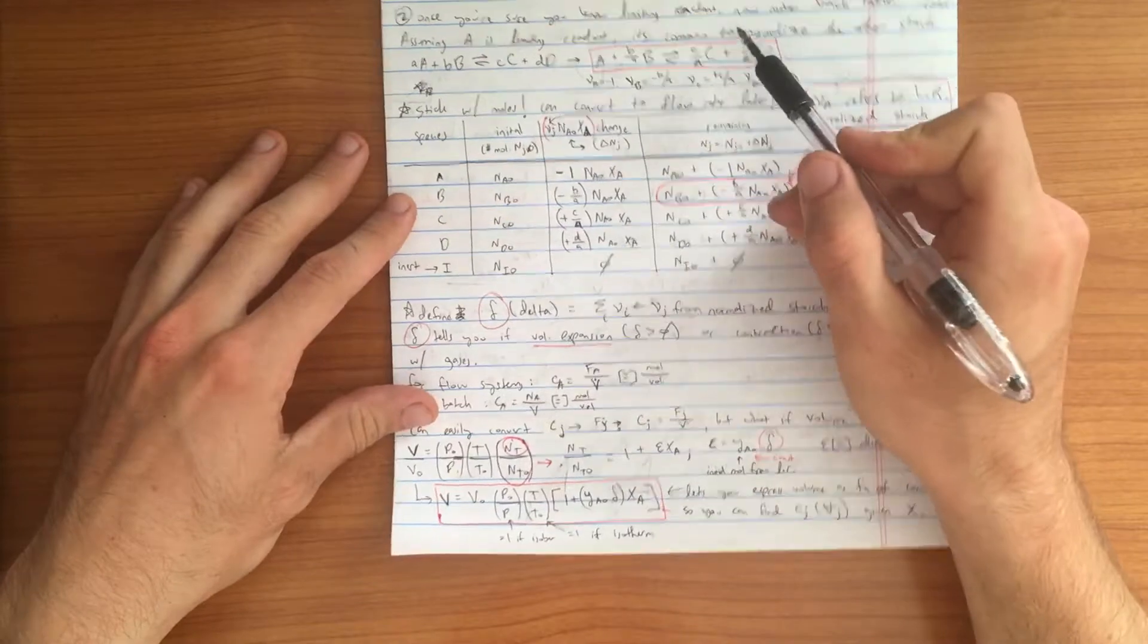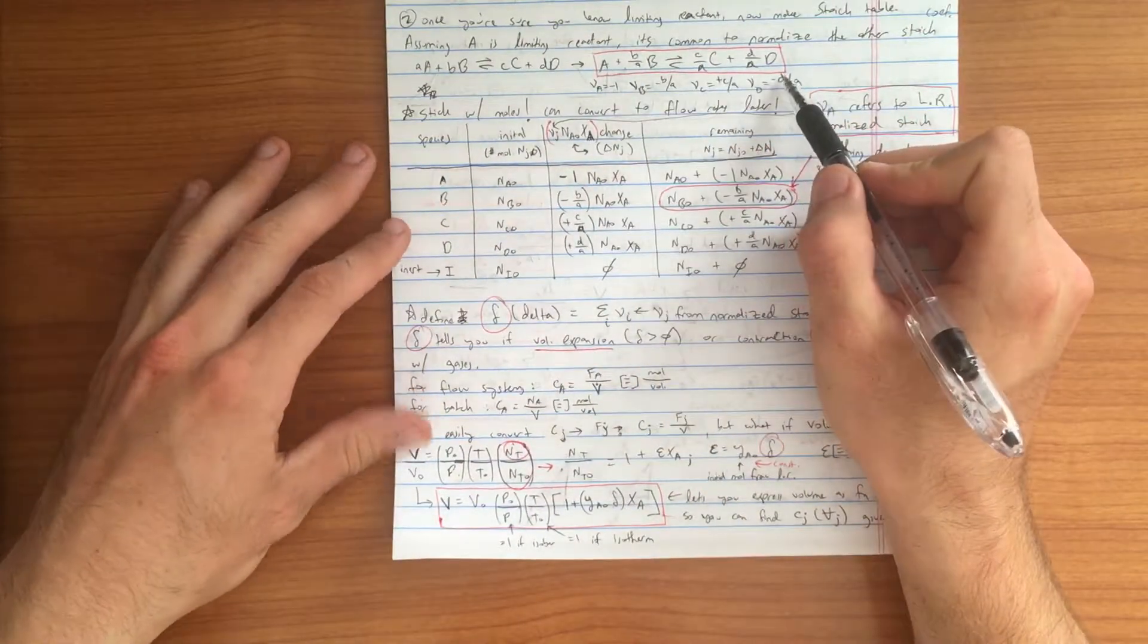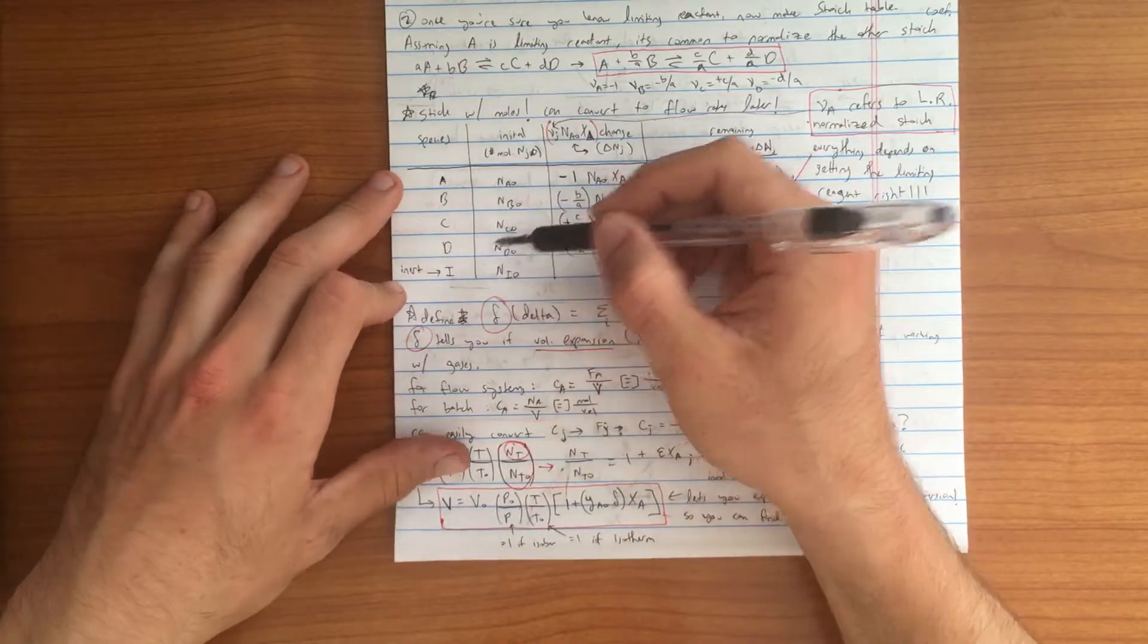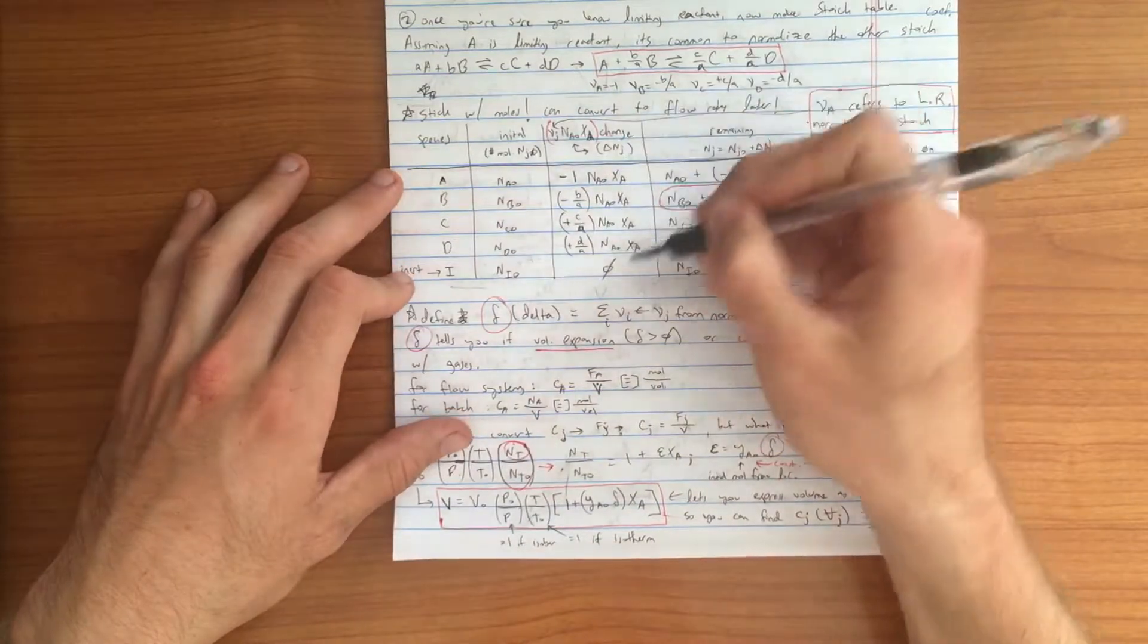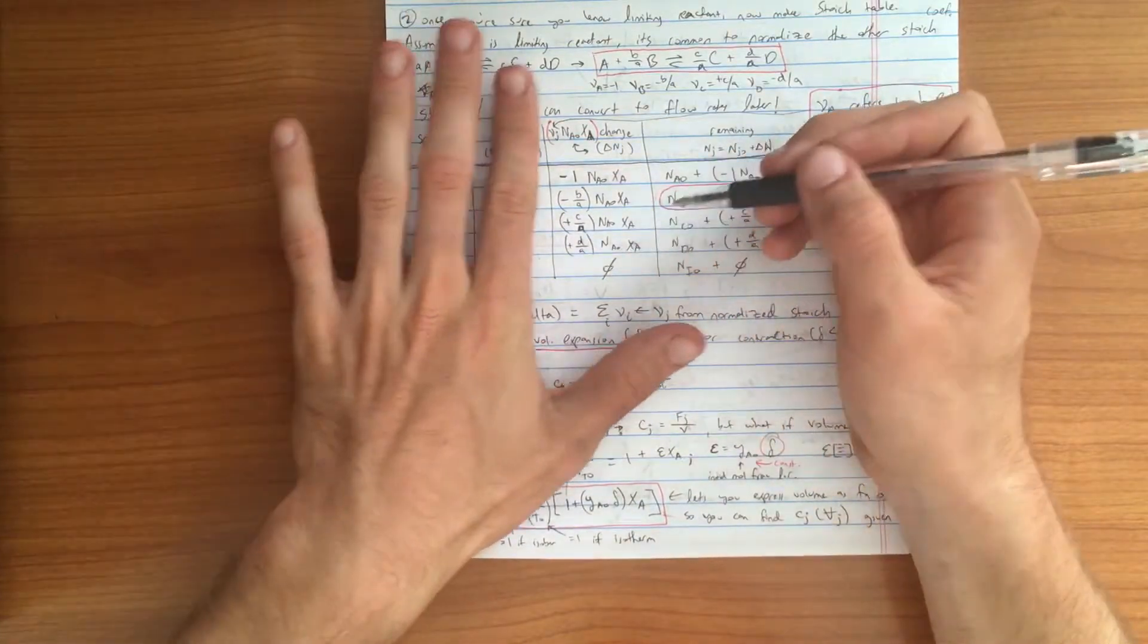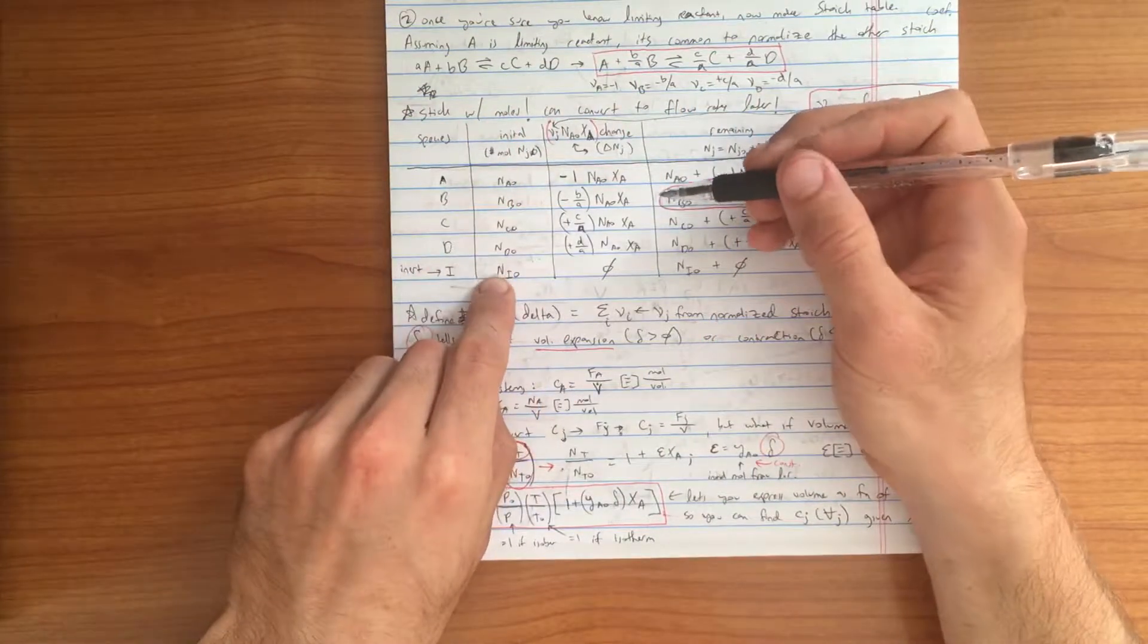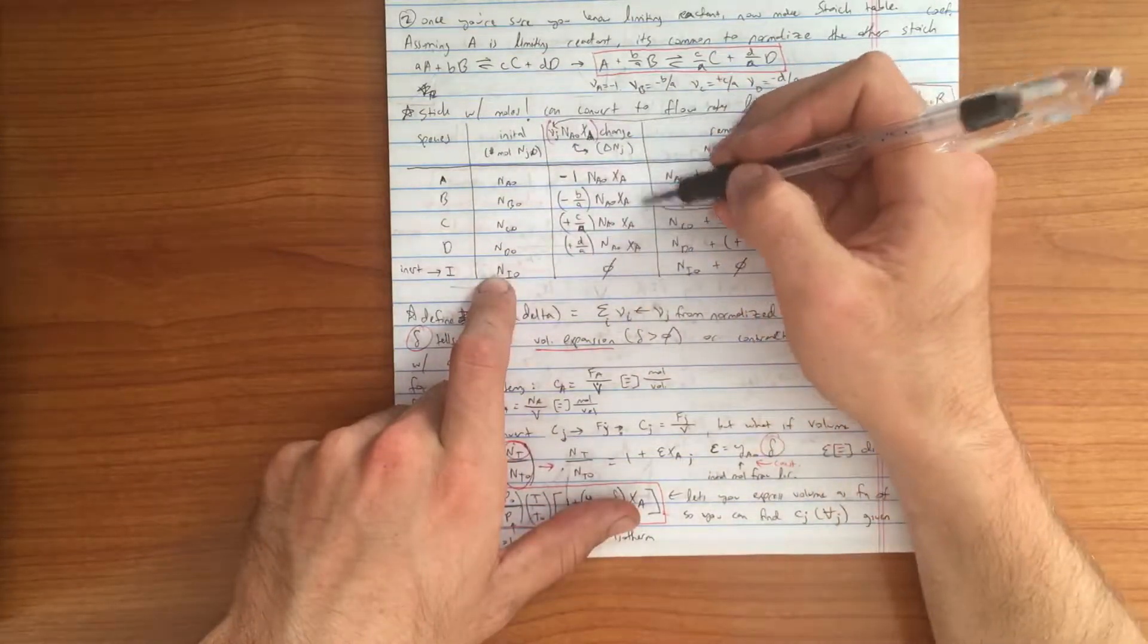In this example, I am building this stoichiometric table based on this generic reaction here. We have species A, B, C, D, and I. I is an inert species that does not have an effect. It does not undergo the reaction, so there is no change in it. Walking through this stoichiometric table, we have the initial number of moles of each species present in this first column or second column.